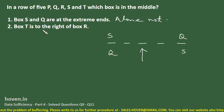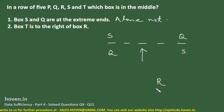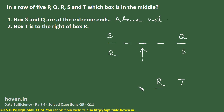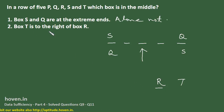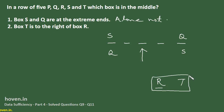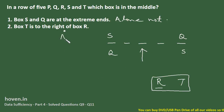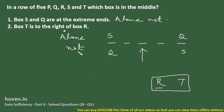The second statement says box T is to the right of box R. This means R and T are adjacent, but depending on orientation, T could be on either side of R. This statement alone does not tell us which box occupies the center of the whole row, so it is also not sufficient.